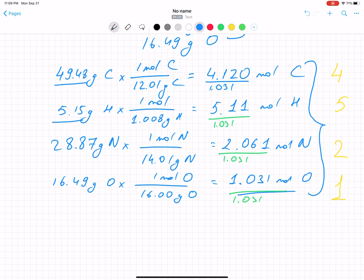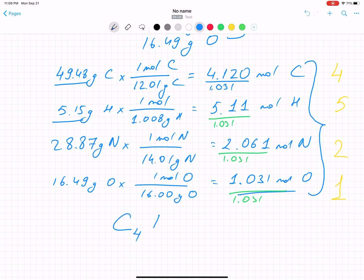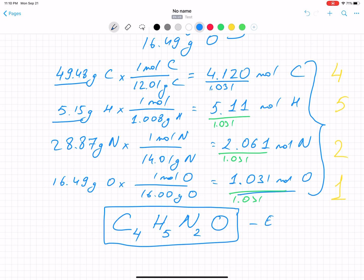Now, how I'm going to write that? I'm going to write the element. The index here 4, C4, H5. The next one is nitrogen 2. And after that is oxygen 1. What we found here, it's basically empirical formula.